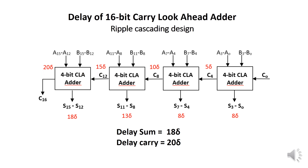The reason is that every Carry Lookahead block can issue its 4 sum bits in parallel, but the carry for each new block is only generated after the previous carries are generated. So you must wait for the successive carries C4, C8, C12, and C16 to be generated. In this design, the carry propagation between modules is still slowing down the adder.